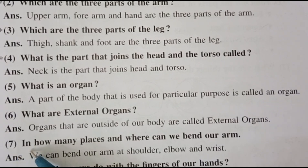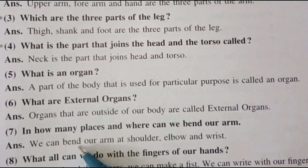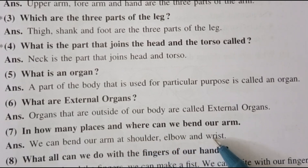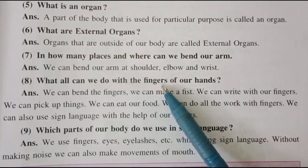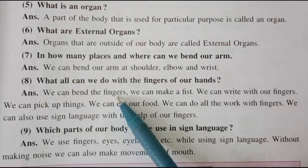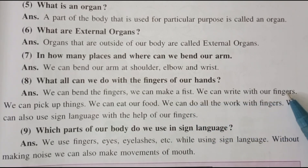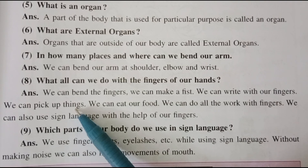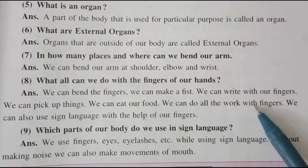7. In how many places and where can we bend our arm? Answer: we can bend our arm at the shoulder, elbow and wrist. 8. What all can we do with the fingers of our hands? Answer: we can bend the fingers, we can make a fist, we can write with our fingers, we can pick up things, we can eat our food, we can do all kinds of work with our fingers.